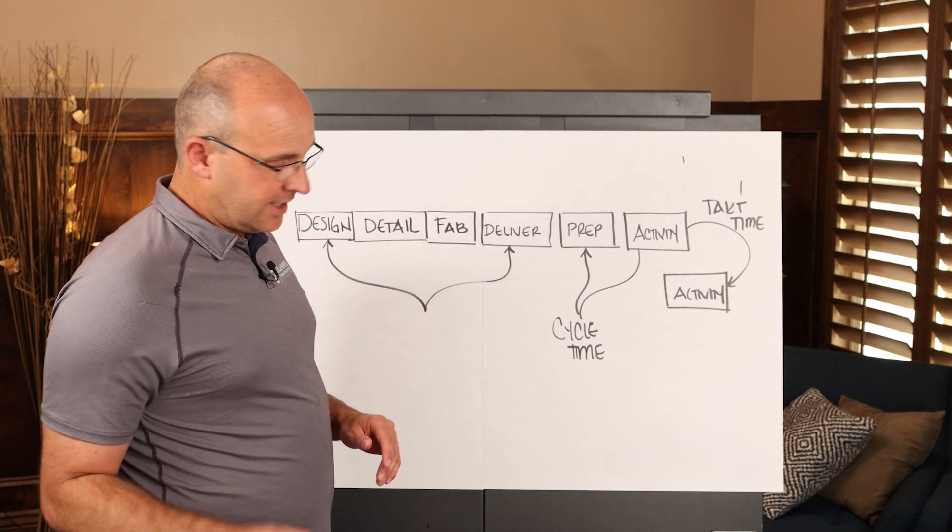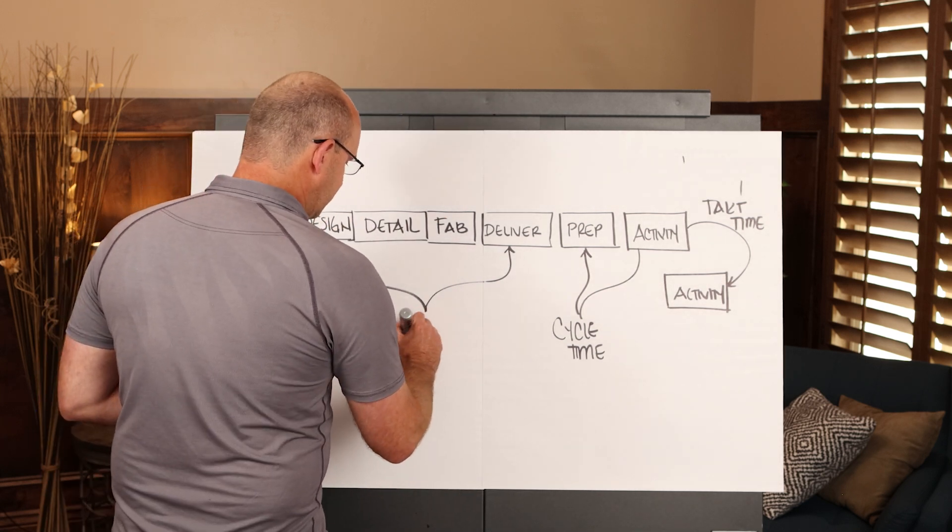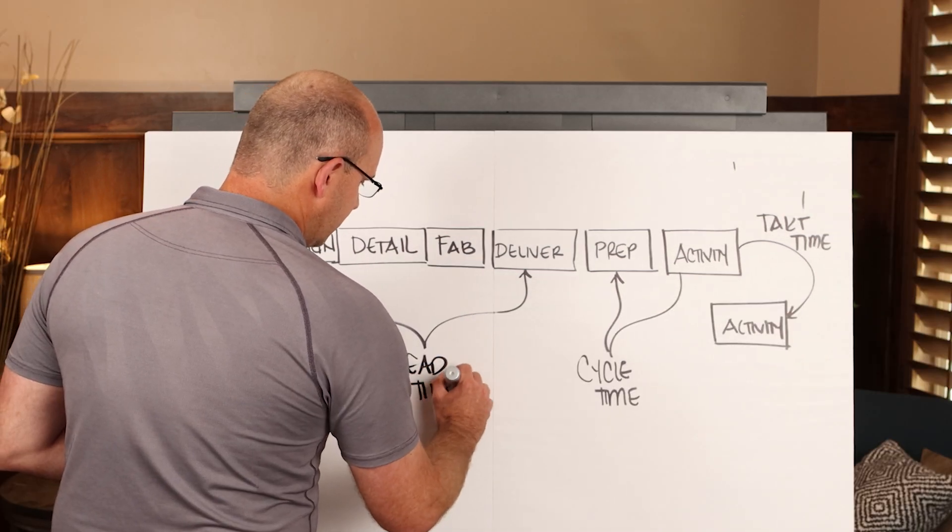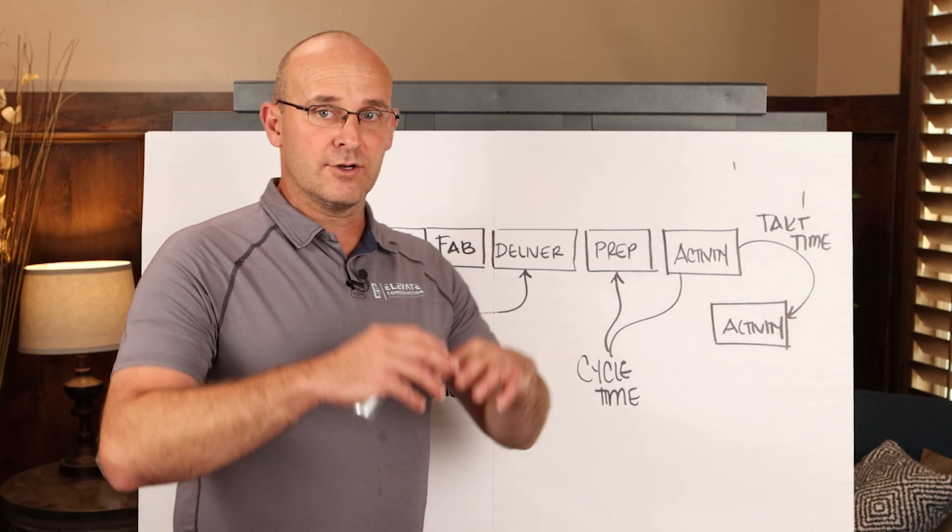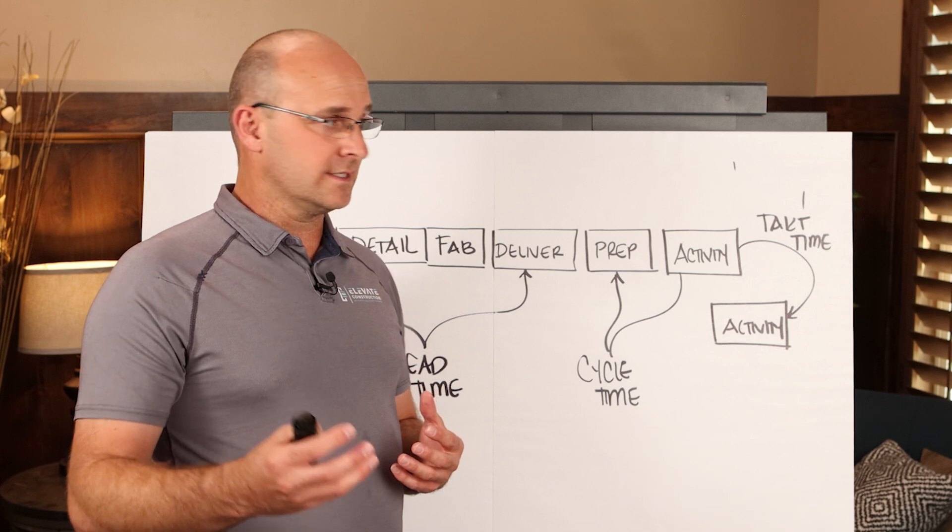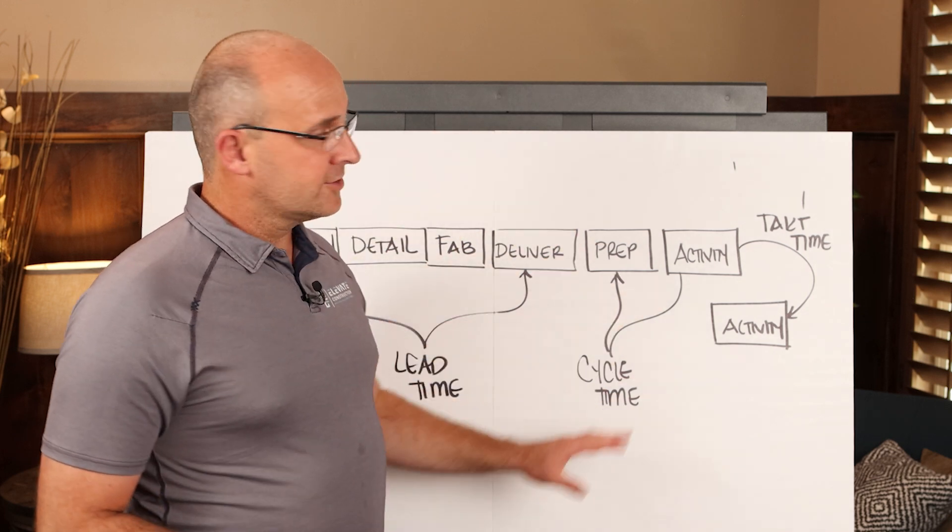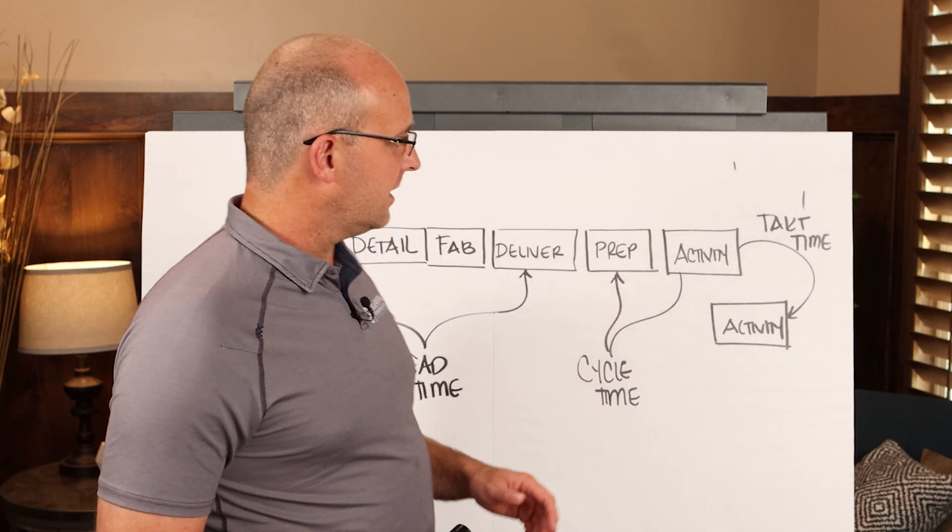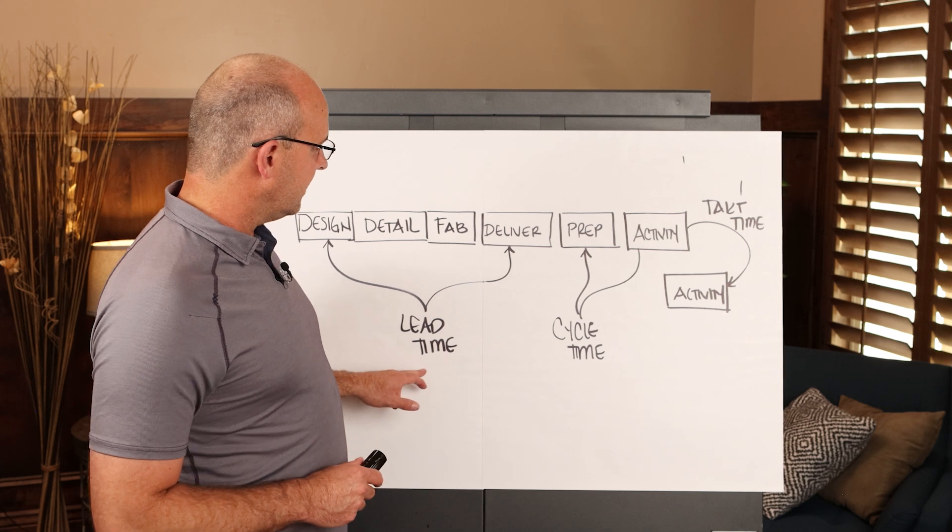And then I would say over here, this is the lead time. And then throughput is the amount, a certain amount of product, how long it takes to move it through a system. So we could also visualize throughput here as well, but I'd like to focus on tack time, cycle time, and lead time.